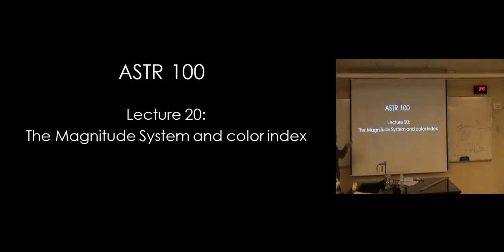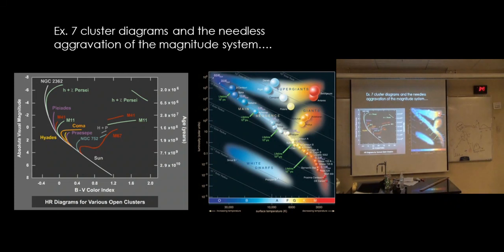Magnitude system, and the first thing that it'll be applied to is this B minus V thing that I said, don't worry about it. It means temperature.